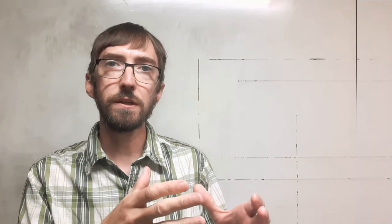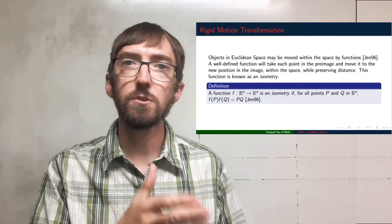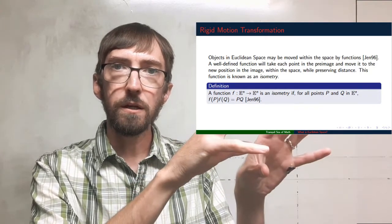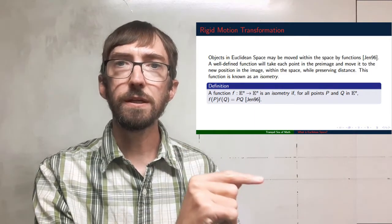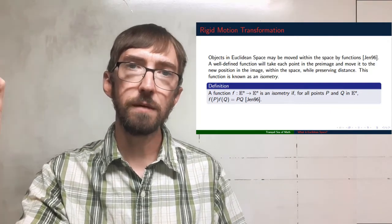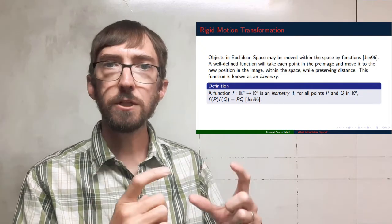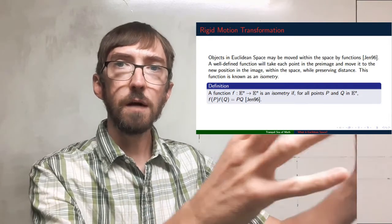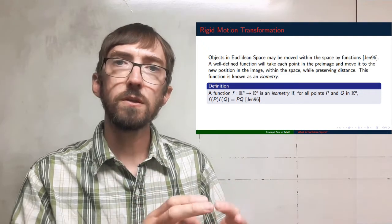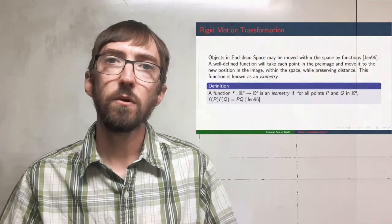Now that we have a way to measure, we have a place where objects can live, and we can move those objects. The way to move an object in a Euclidean space is to define a function that takes all the points from one object and maps them into another. The object we start with is called the pre-image; the object we end with is the image. When all distances and angle measures are preserved, we call this an isometry.